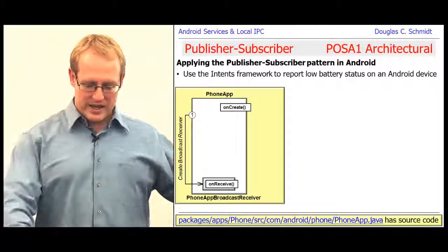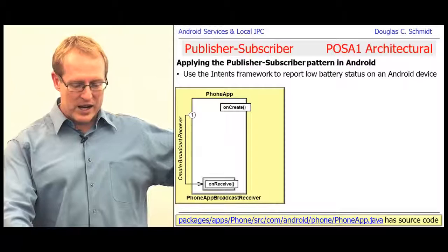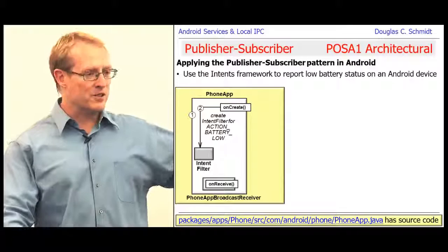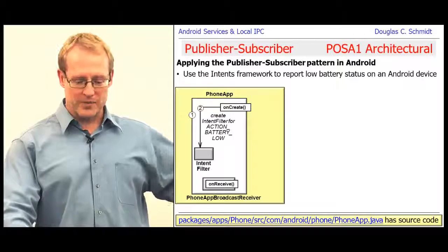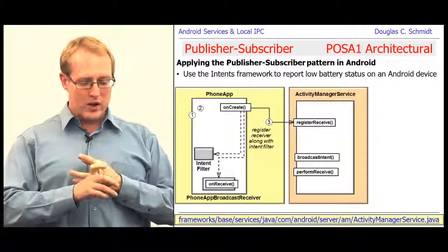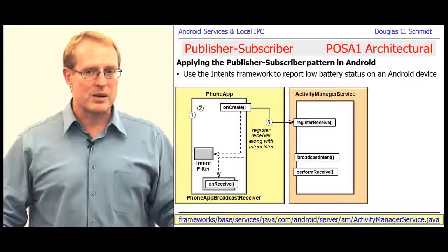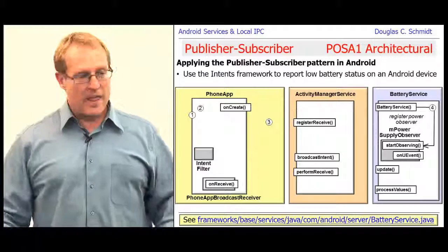When the phone app starts up, as part of its initialization before onCreate is called, it creates a broadcast receiver called PhoneAppBroadcastReceiver. Then in its onCreate method, it creates a bunch of intent filters — one of which is for ACTION_BATTERY_LOW. It registers that intent filter along with the broadcast receiver with the activity manager service, which stashes everything in that hash map we looked at.